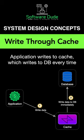What is a write-through cache? The application writes directly to the cache, which writes to the database every time. It's a simple pass-through mechanism where the application writes data to the cache, and the cache writes the data to the database every time there is a call.